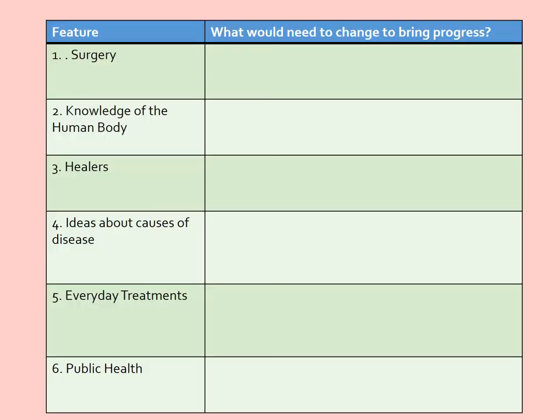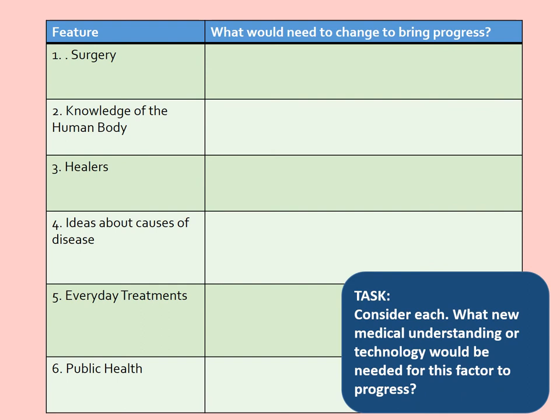For this next task we're going to consider different factors of medicine and whether anything really changed in the Renaissance. If you've already studied this and are using it for revision, think about what changed and what stayed the same in each area. If you haven't studied the Renaissance in sufficient detail, think about what would be necessary for these things to progress — what new medical understanding or technology would be needed for each factor to progress?